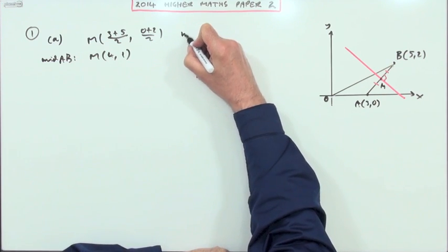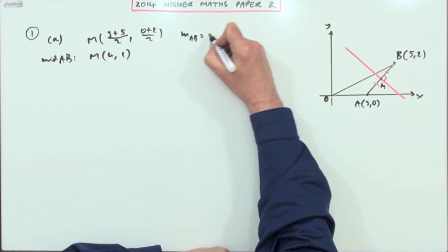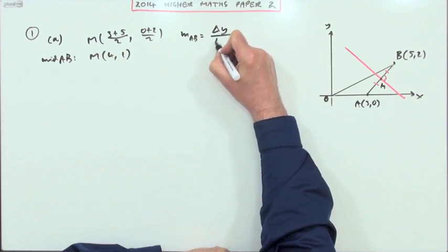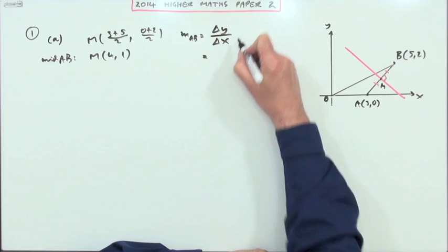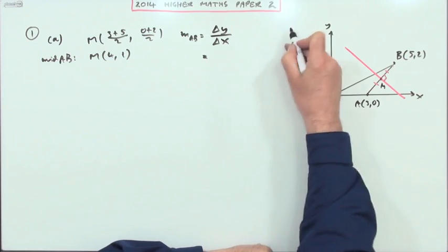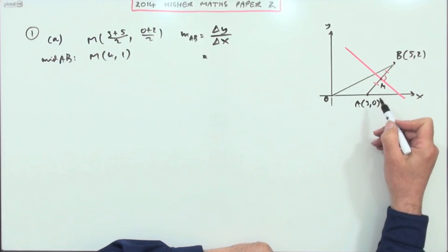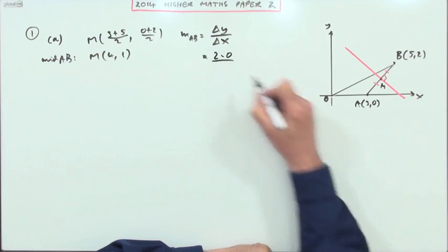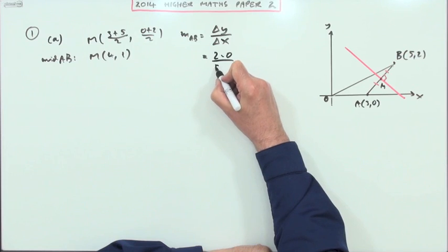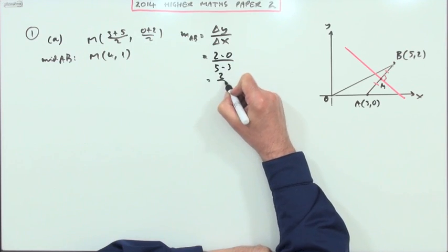Next thing would be what's the gradient of AB? The gradient of AB will be the difference in the y coordinates over the difference in the x coordinates. Probably just leap straight in with the numbers. I'm not being confused here, especially if I've got a diagram. It's 2 - 0 for the y coordinates and 5 - 3 for the x coordinates.